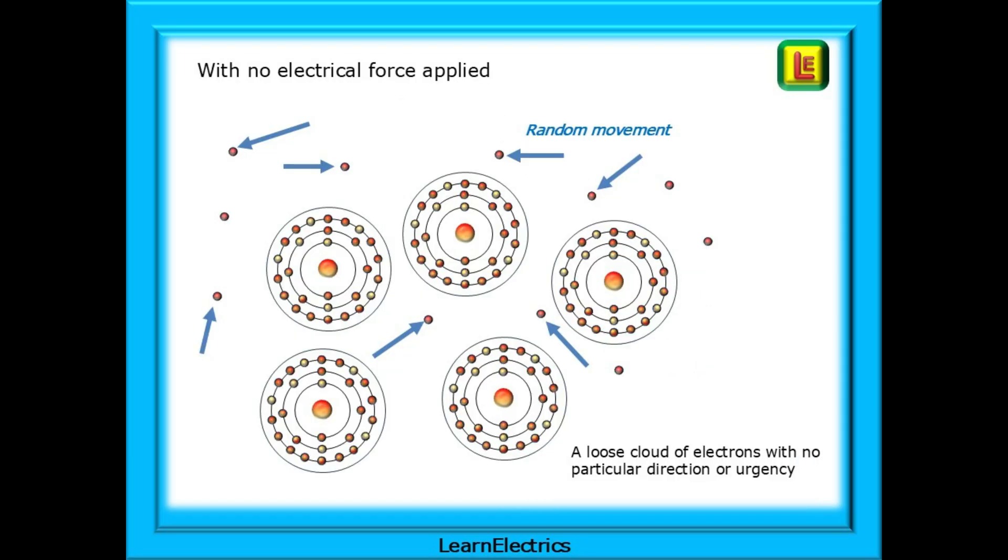With no electrical force applied to the copper, the valence electrons form a loose cloud of electrons that drift around with no particular direction or urgency, sometimes left, sometimes right, sometimes up, sometimes down.